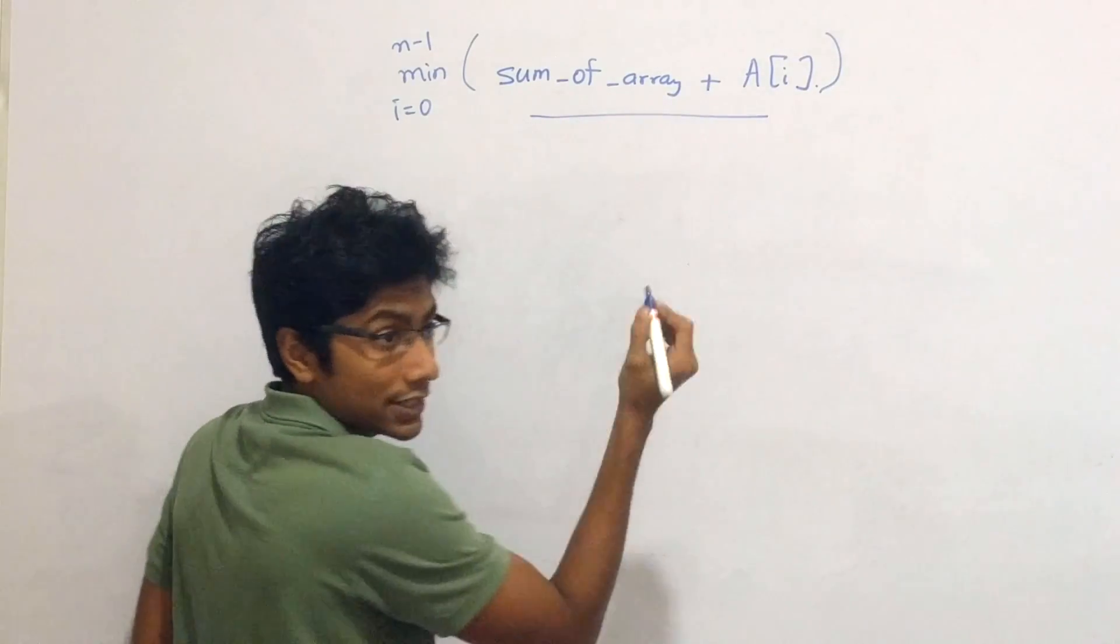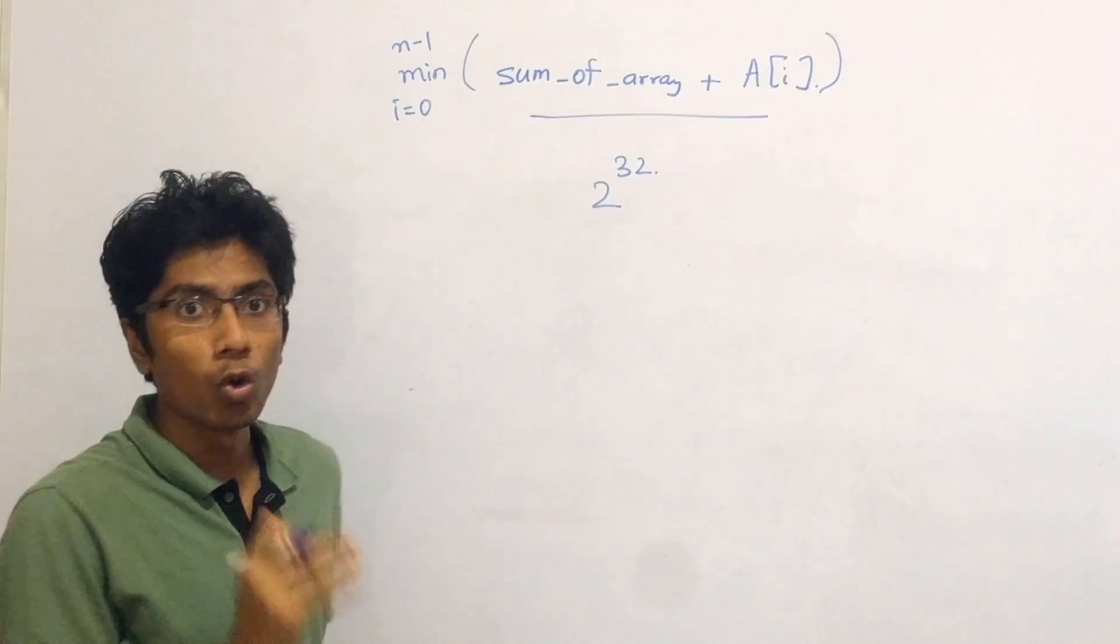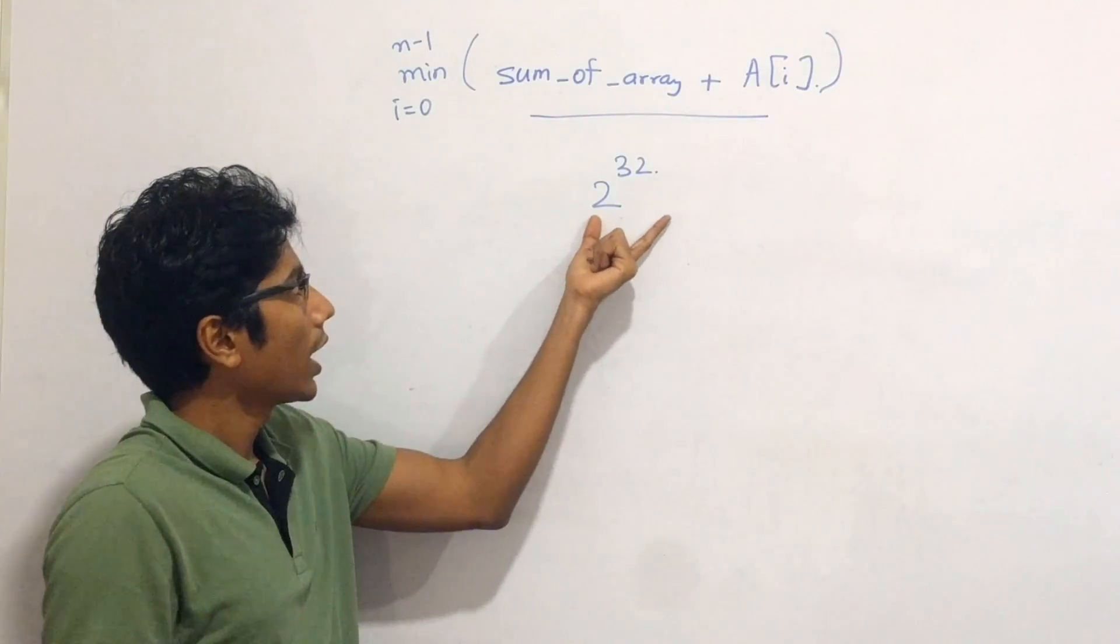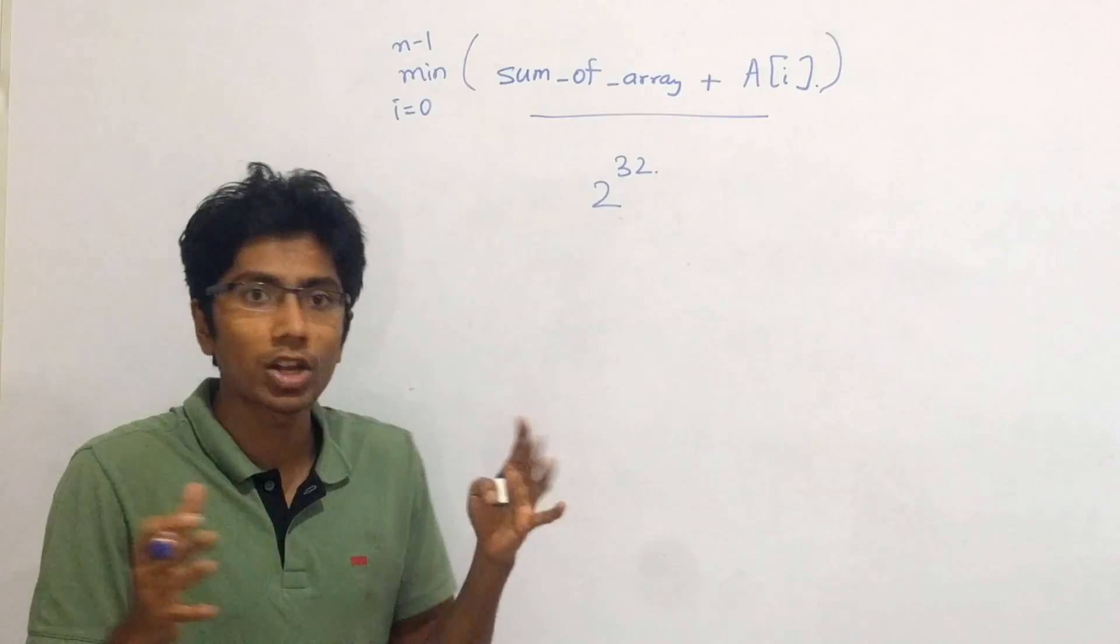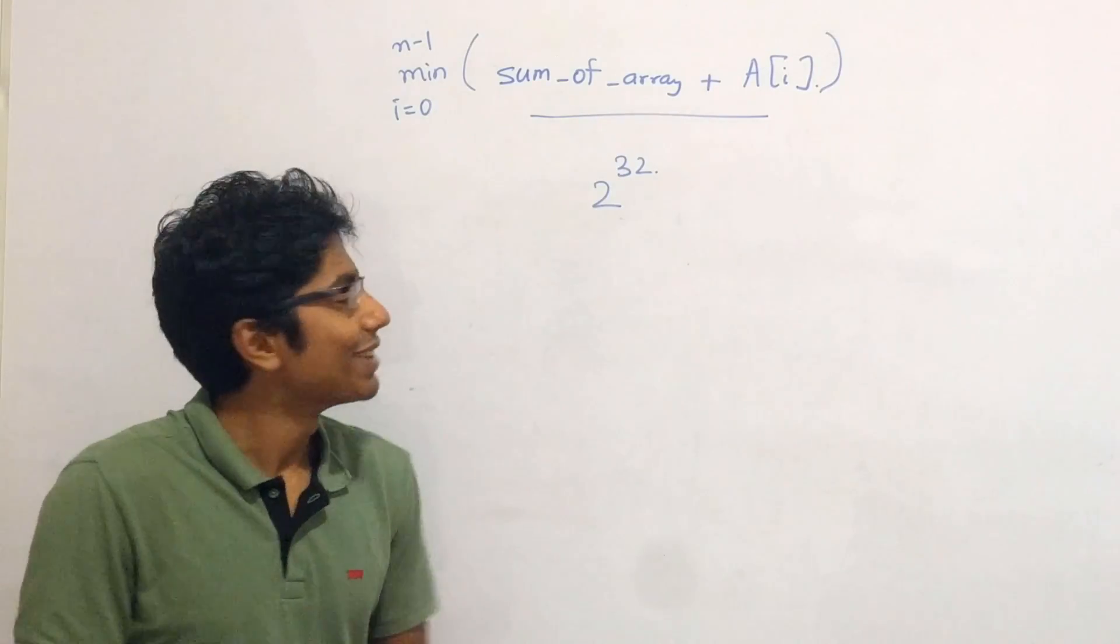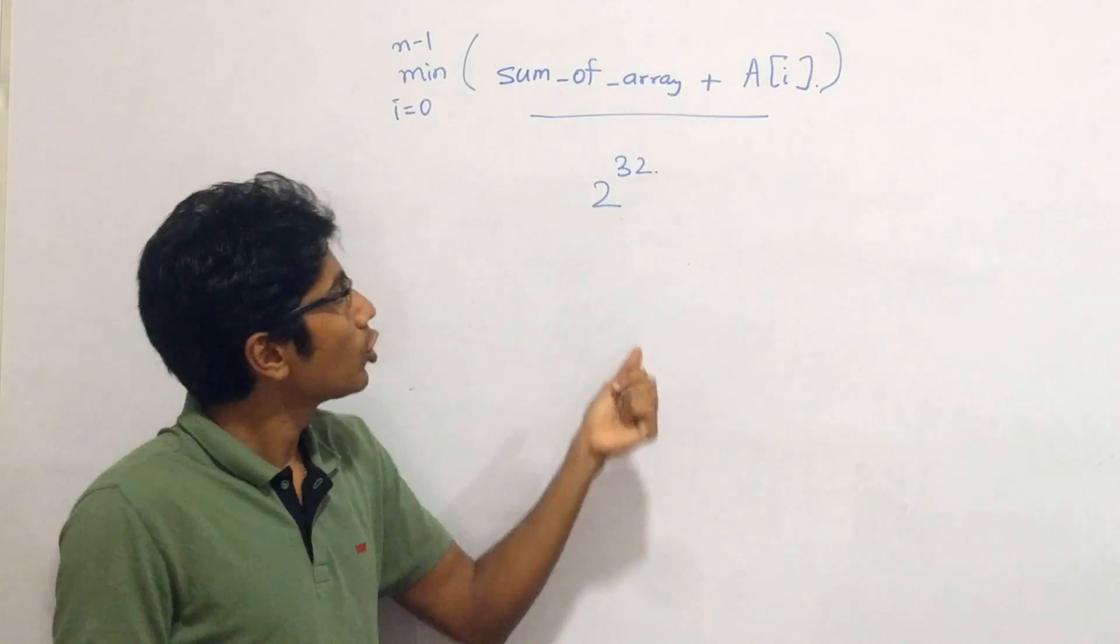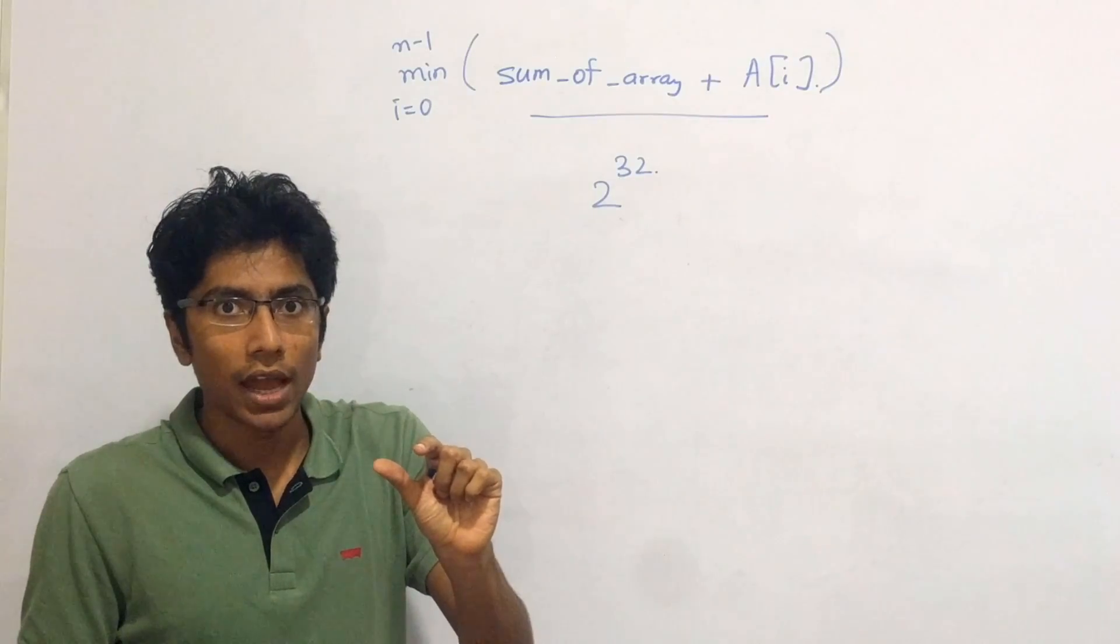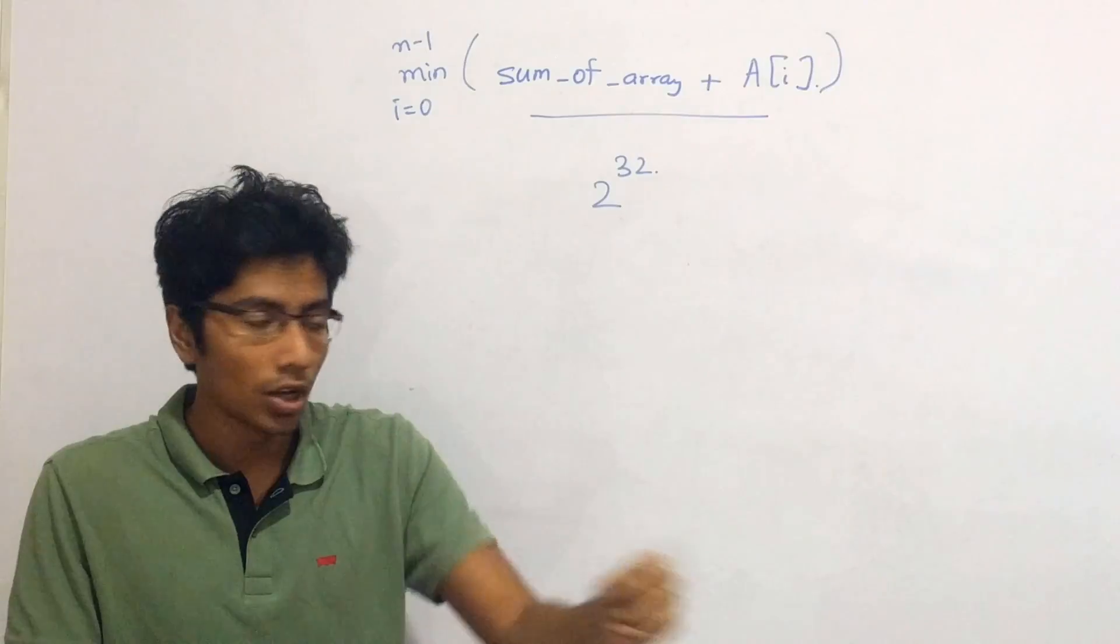When this sum exceeds 2 raised to the power 32, then you will have an overflow. That's the main point of the question. There is an overflow. So any data type that you take in any programming language has a particular limit that it can hold, apart from Python maybe. But if you exceed 2 raised to power 32, you are exceeding the limit that 32-bit integers can take. And what will then happen is whatever excess information you have is lost.